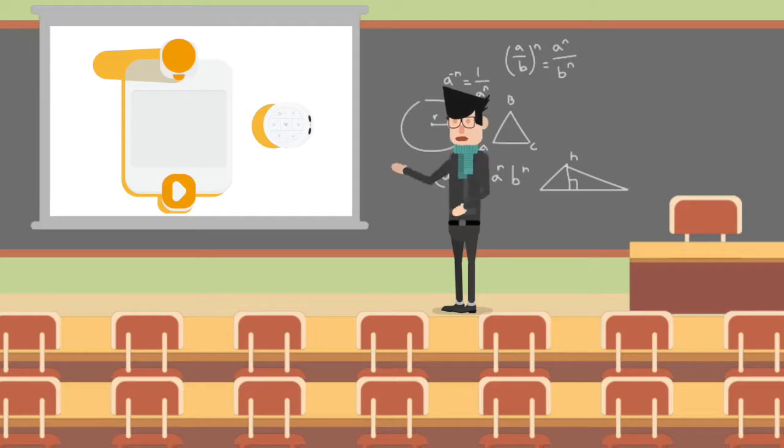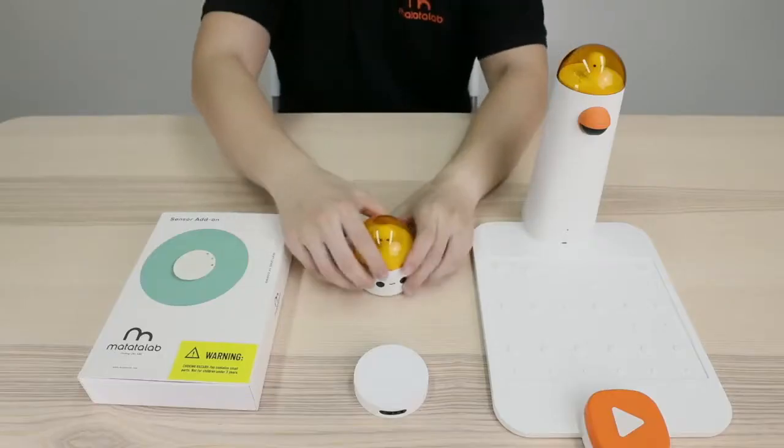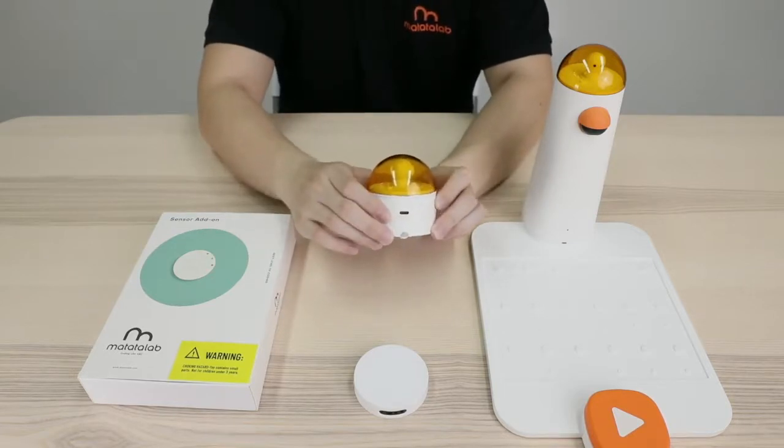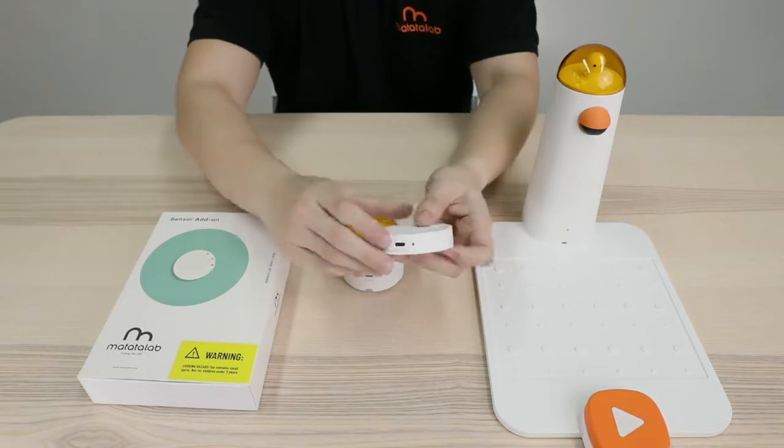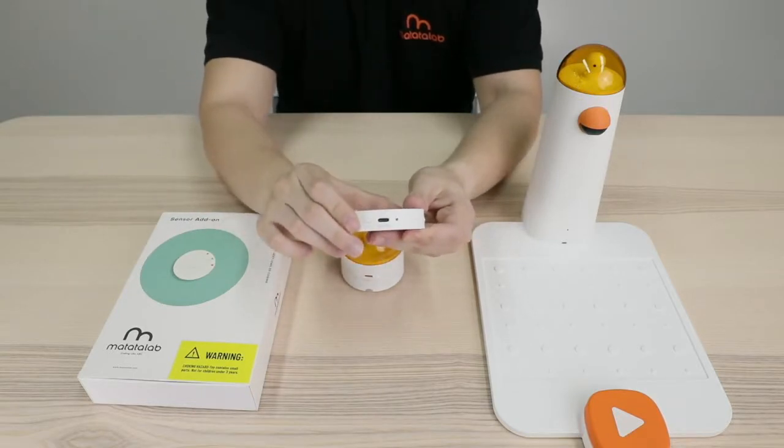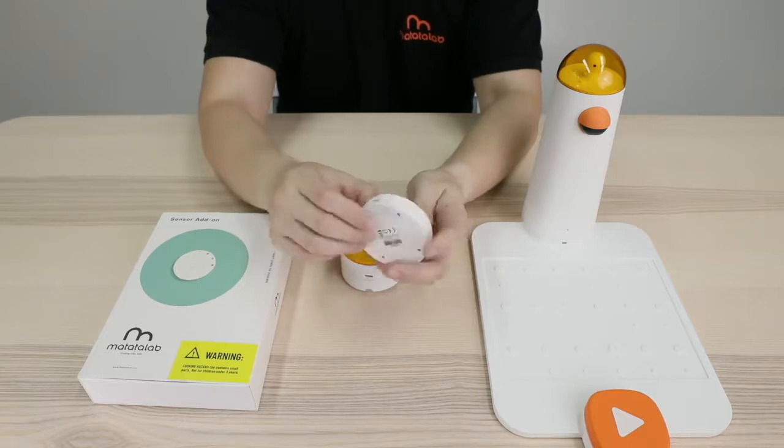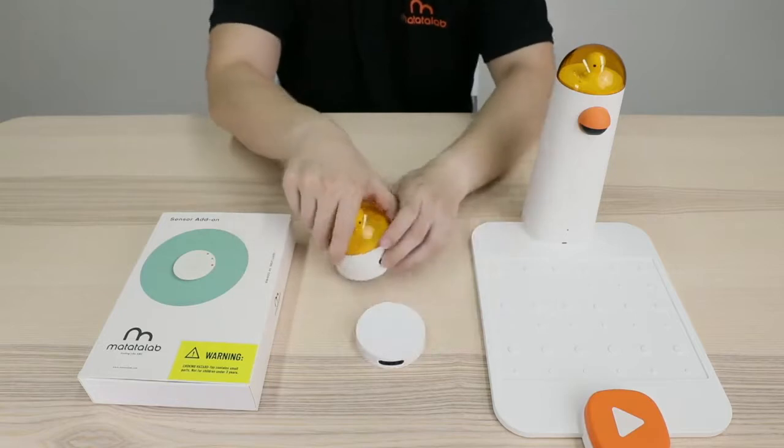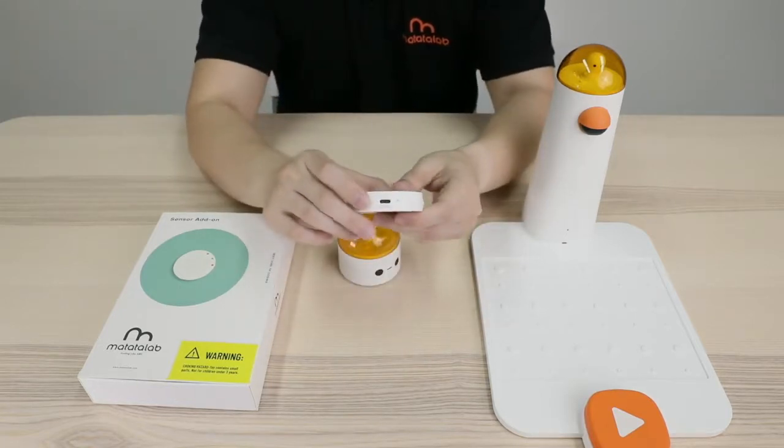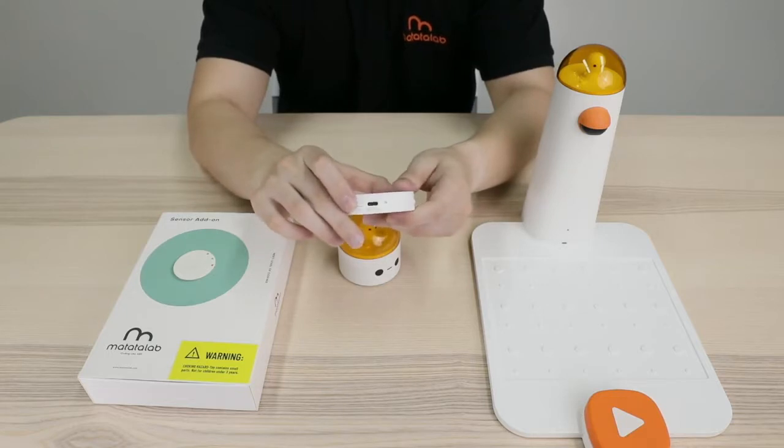First, let's talk about how to connect our three components. When connecting, we first turn on the power of the controller and the matata bolt. And then, we quickly click the controller's power button three times to enter its connection state.